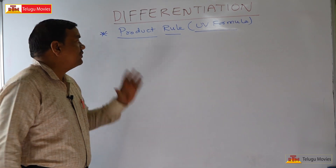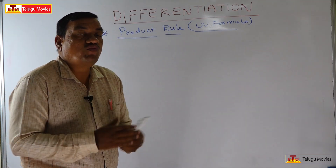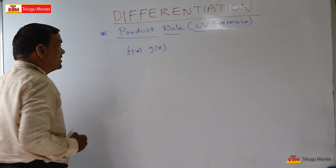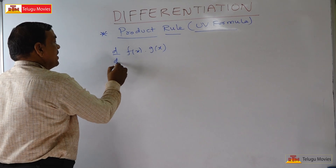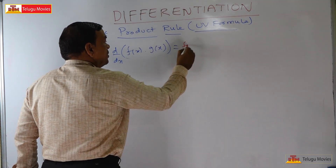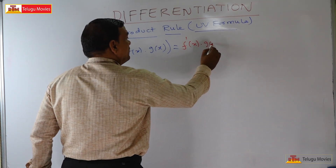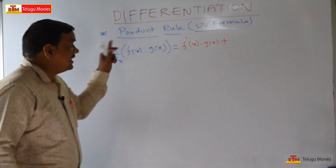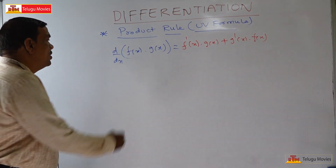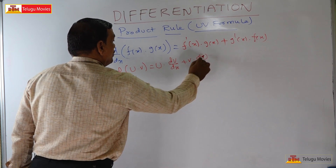Welcome to another concept — the product rule, sometimes called the UV formula. If there is a product of two functions, one function f of x and another g of x, the derivative of their product d by dx of f of x into g of x is: f dash of x into g of x plus f of x into g dash of x. Simplified as u into dv by dx plus v into du by dx.